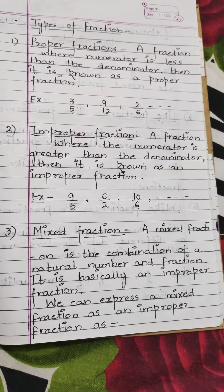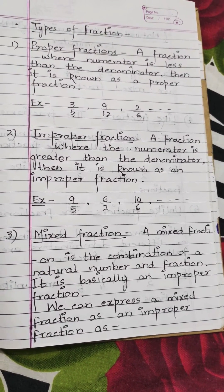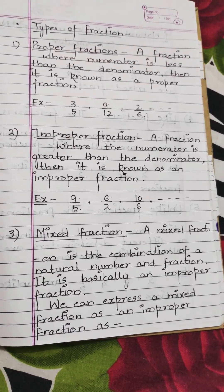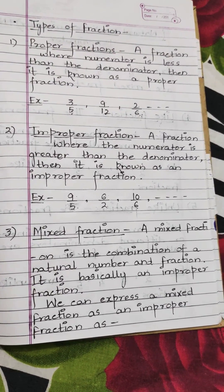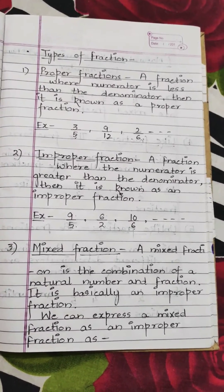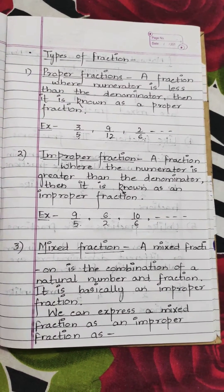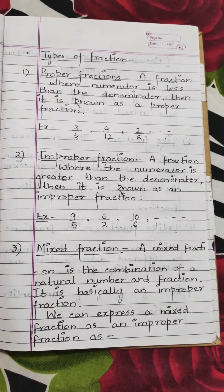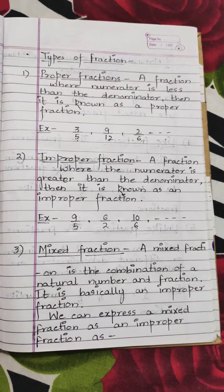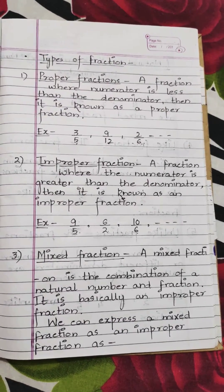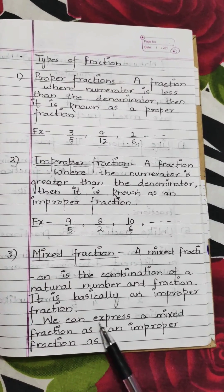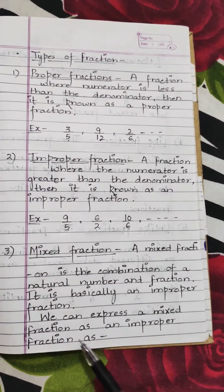The next type is the mixed fraction. A mixed fraction is the combination of a natural number and a fraction. When we talk about proper and improper fractions we deal with fractions alone, but a mixed fraction includes a natural number as well as a fraction. It is basically an improper fraction — when we convert a mixed fraction we always get an improper fraction.